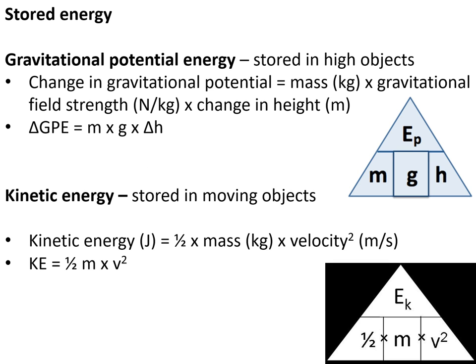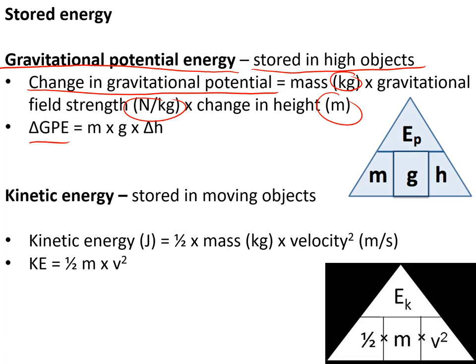Stored energy: gravitational potential energy is energy stored in objects based on their height. The change in gravitational potential energy — delta GPE — equals the mass in kilograms times the gravitational field strength times the change in height: delta G = m × g × delta h. Remember that the delta sign means change, and the gravitational field strength on Earth is 10 newtons per kilogram.